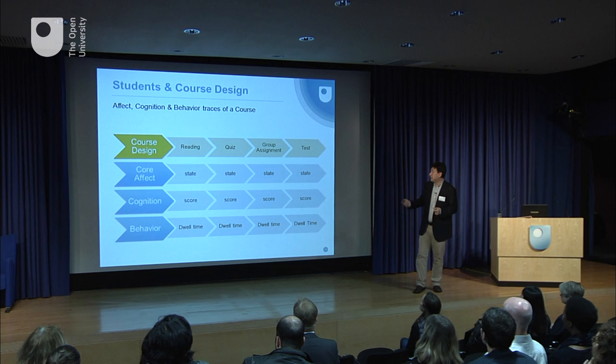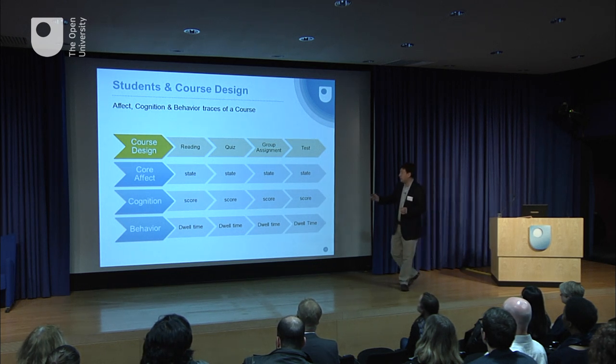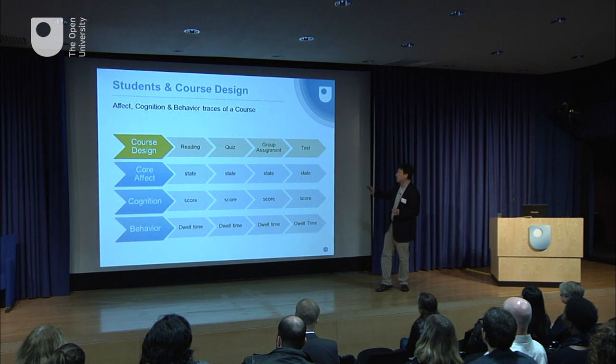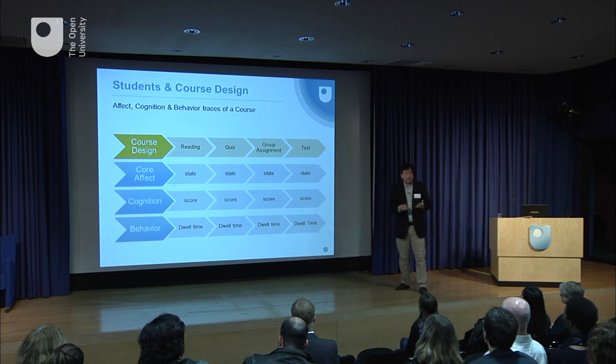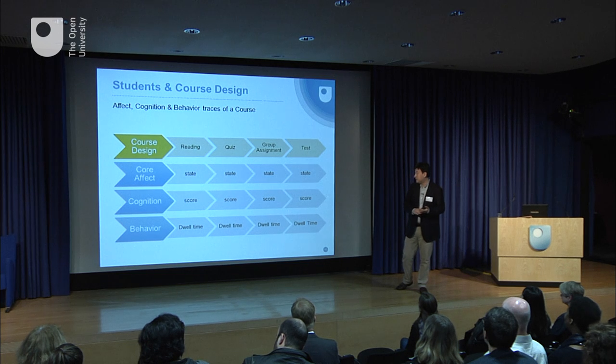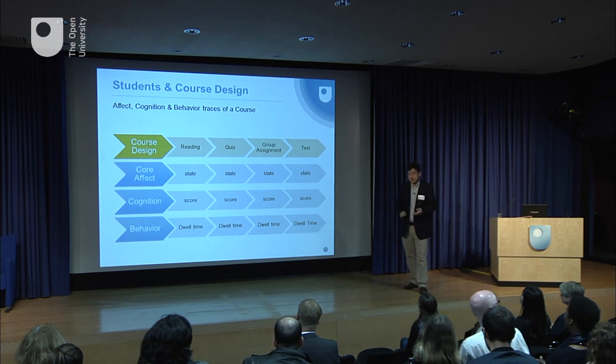Here is an example of what a course design might look like — it might include a reading, a quiz, a group assignment, and a test. Typically the feedback we provide includes feedback about cognition and how effective students are at producing their understanding of the learning activities. We also measure behavioral things like attendance or how much time they spent on the website, but we don't necessarily get at emotional measurement or surface it for learners or designers.